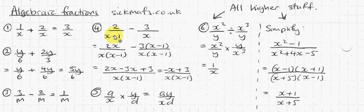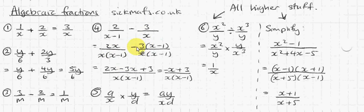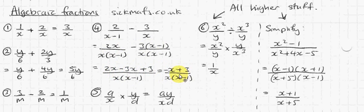If I'm timesing this denominator by x, that means I have to times the top by x as well. So you get 2x over x times (x minus 1). And this one, because I'm timesing the bottom by x minus 1, I have to times the top by x minus 1. You can write it as one fraction: 2x minus 3(x minus 1), which multiplies out to minus 3x plus 3. So when I put these fractions together I get 2x minus 3x plus 3 over that same denominator.